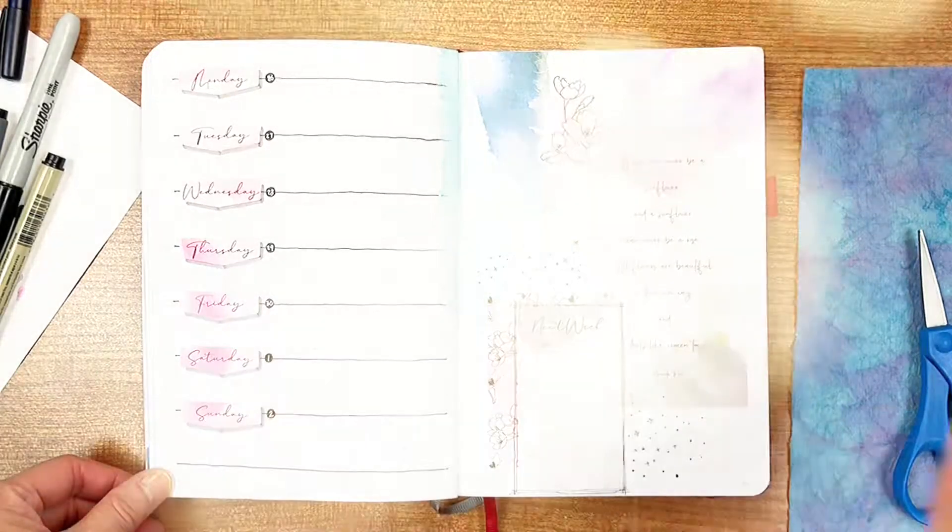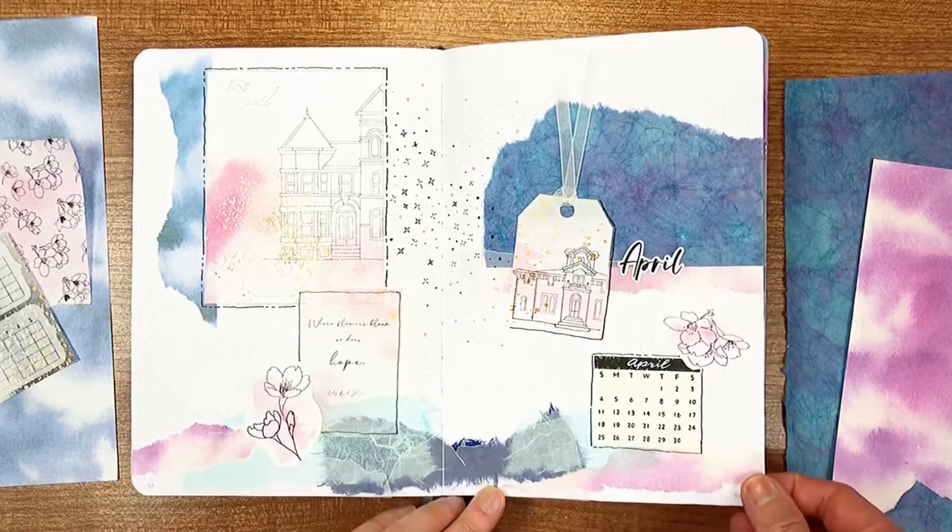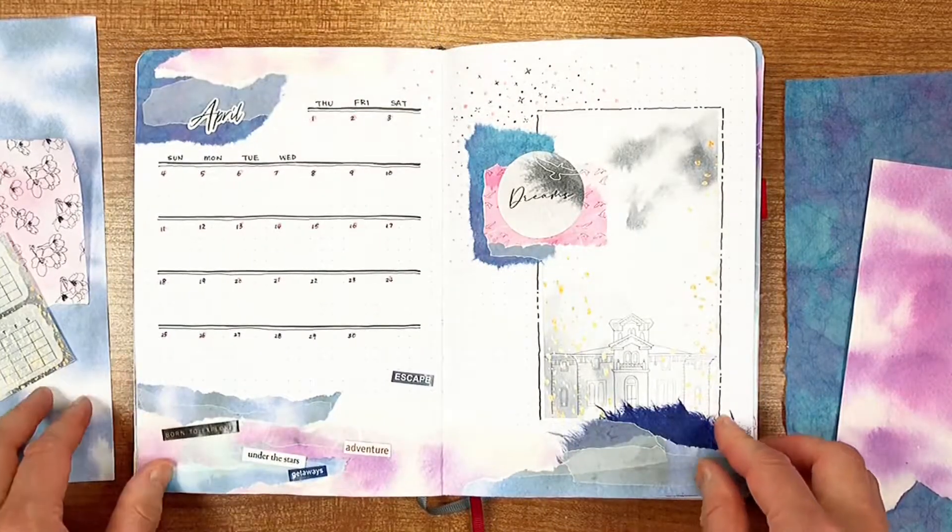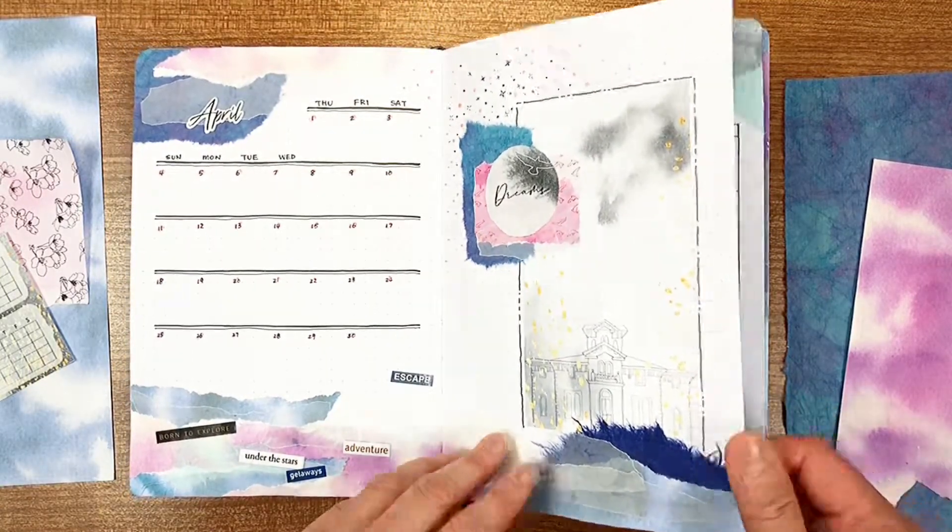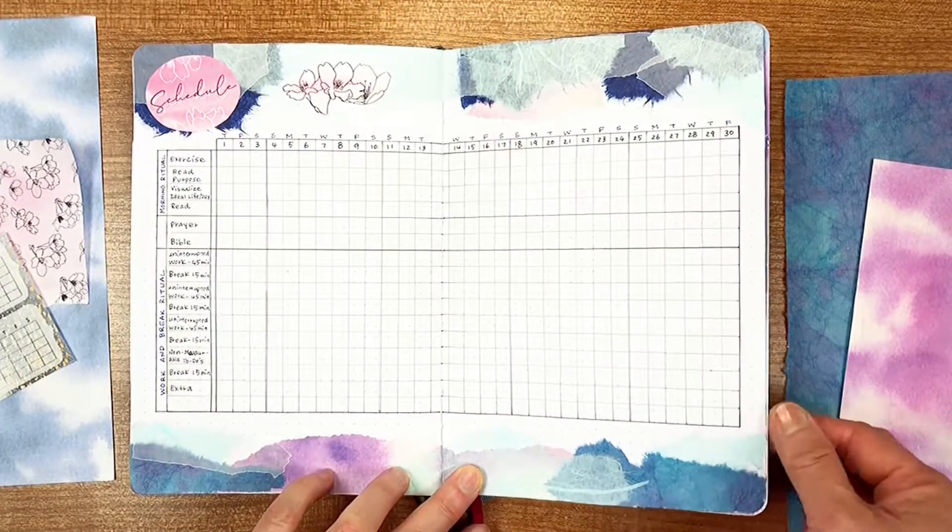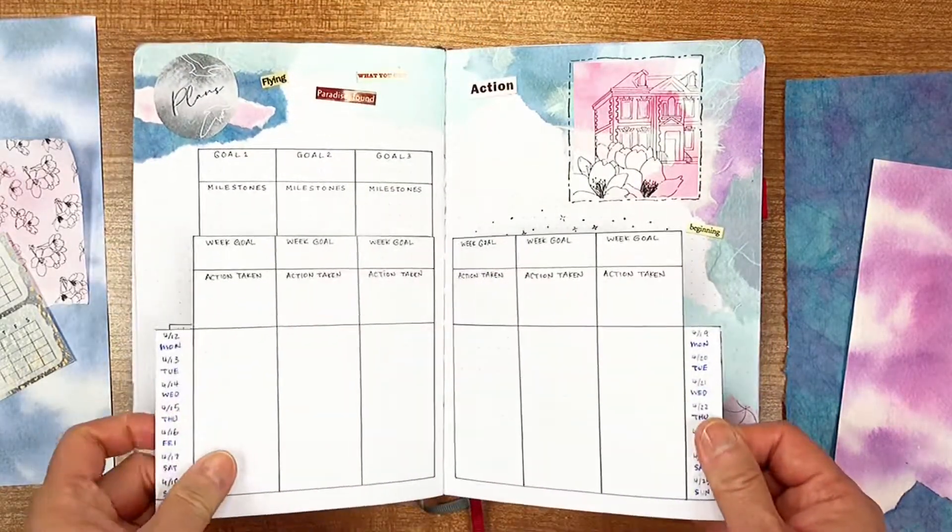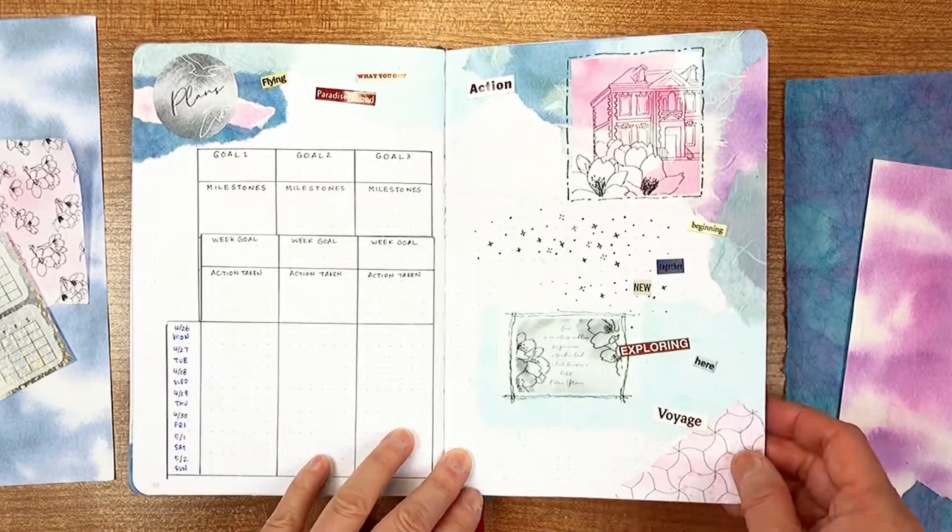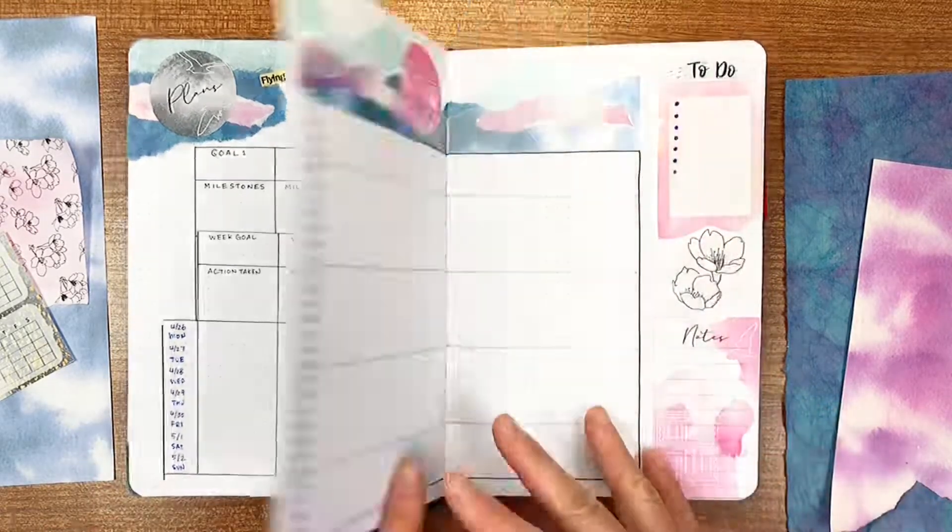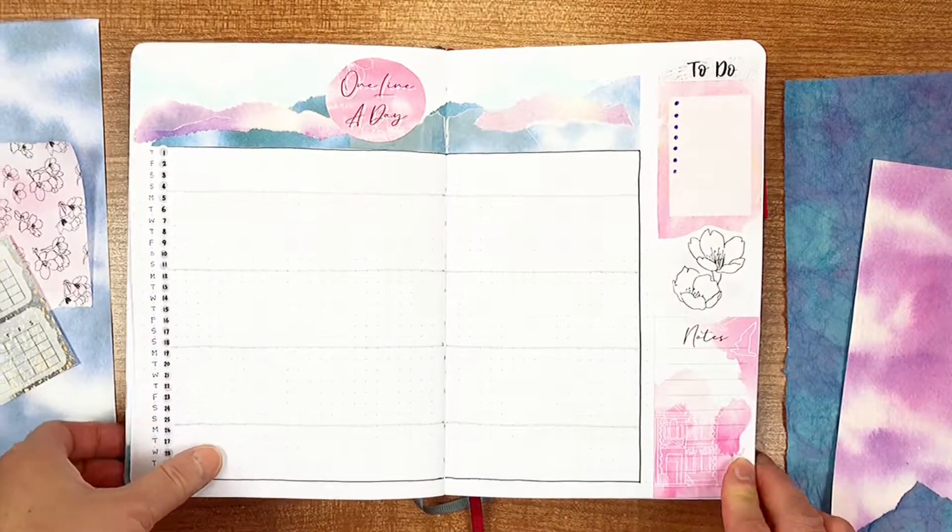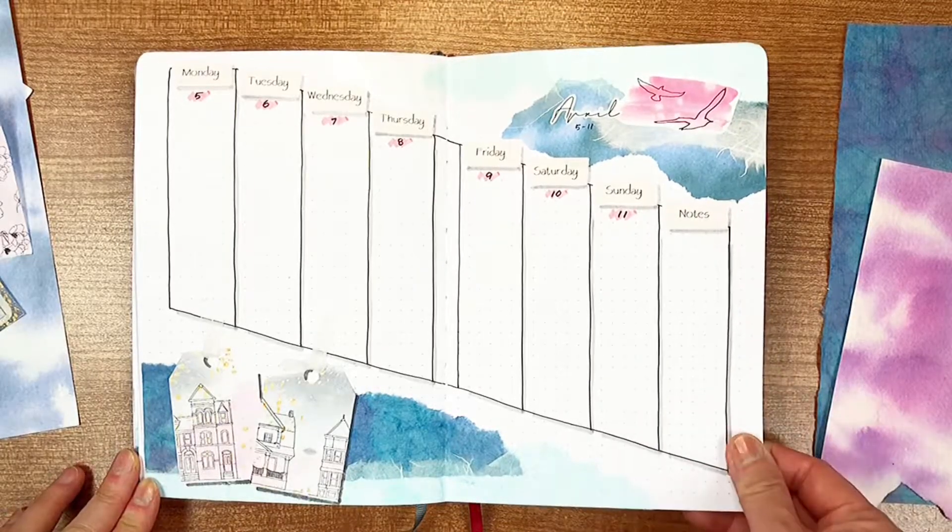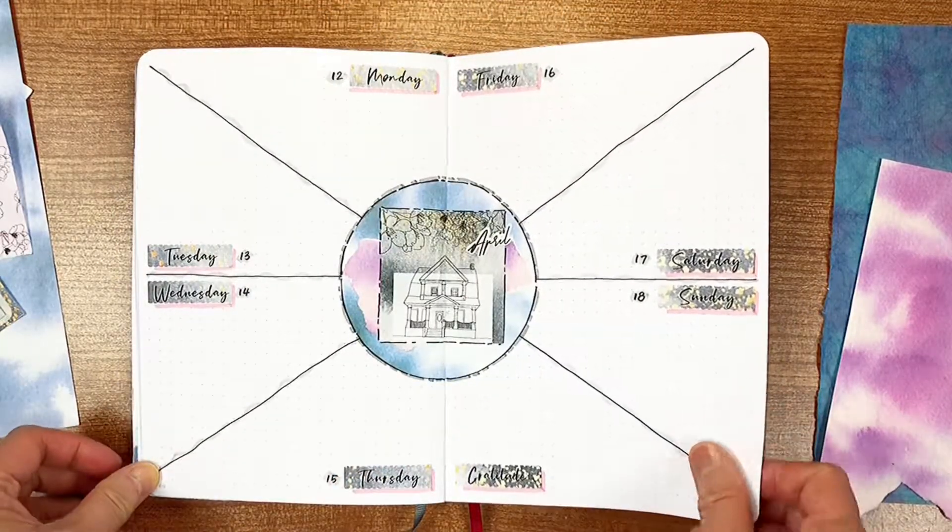This is the final flip through for my whole April bullet journal spread. I really like this month's color palette since pink, purple, and blue look very dramatic. It's very nice to match them along with the white and gray color design elements.